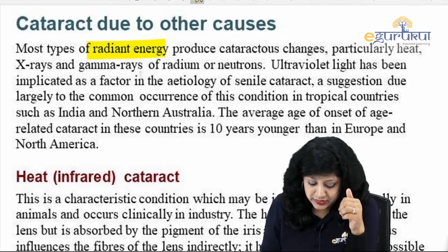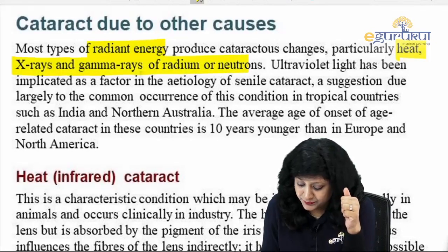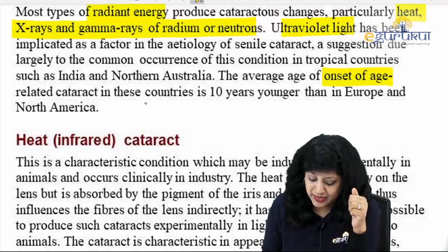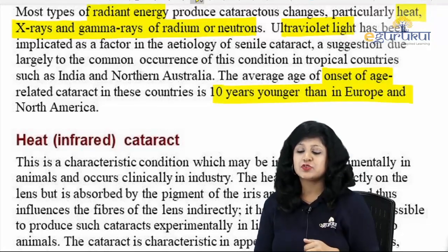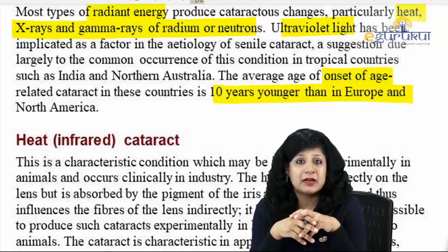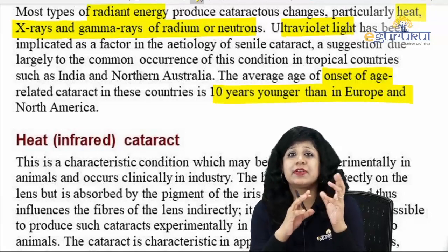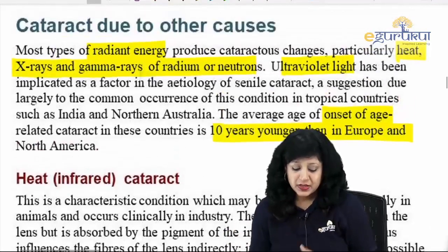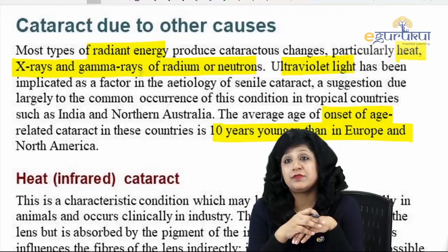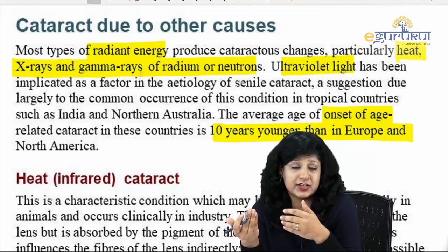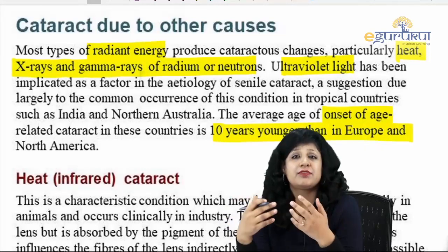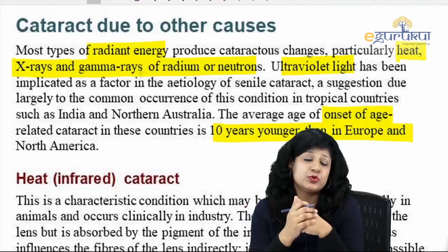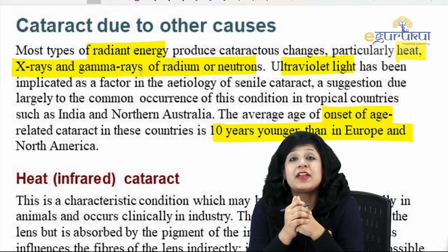Coming to cataracts due to other causes — we have radiant energy: particularly heat, gamma rays, X-rays, ultraviolet radiations. The average age of onset of age-related cataract in some countries is 10 years younger than in Europe and North America. Genetics, climate, and environmental factors all play important roles. Radiations are again responsible — we have ionizing radiations and non-ionizing radiations: X-rays, gamma rays, neutrons, infrared rays — all causing cataract. Ionizing radiations are more dangerous than non-ionizing.